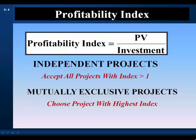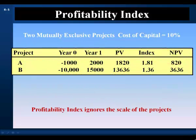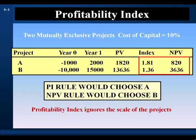When evaluating mutually exclusive projects, the profitability index ranks projects by their index and chooses the highest. In an example with two projects of different scale, the PI rule chooses project A for its higher index while the NPV rule chooses project B for its higher net present value. In a conflict, the NPV rule wins. Like the IRR, the profitability index is a relative measure that ignores the scale of projects, so it is unreliable in ranking mutually exclusive projects when a significant difference in scale exists.